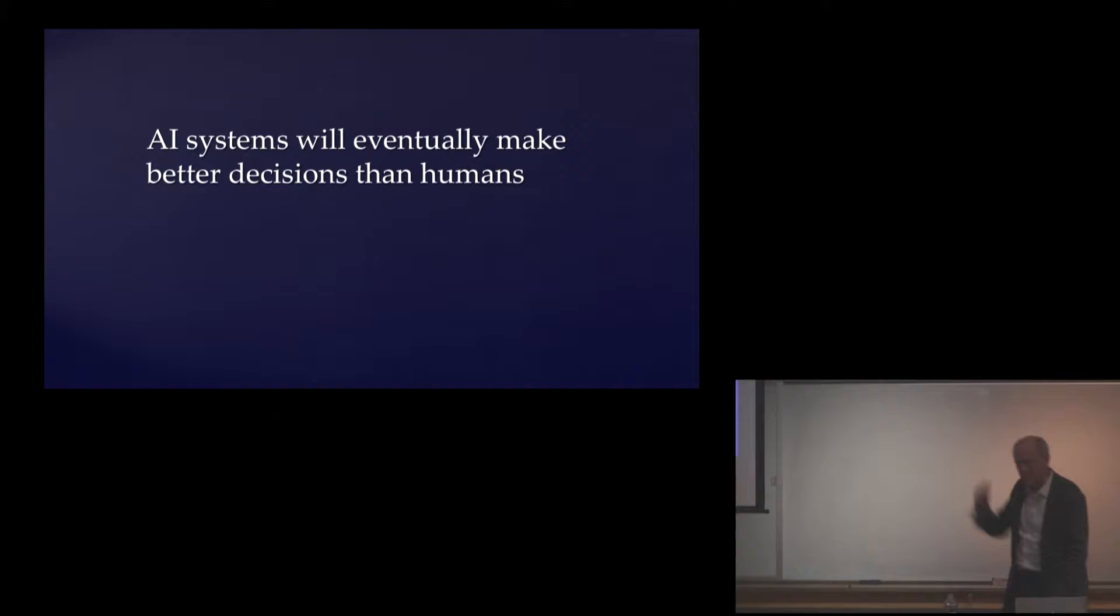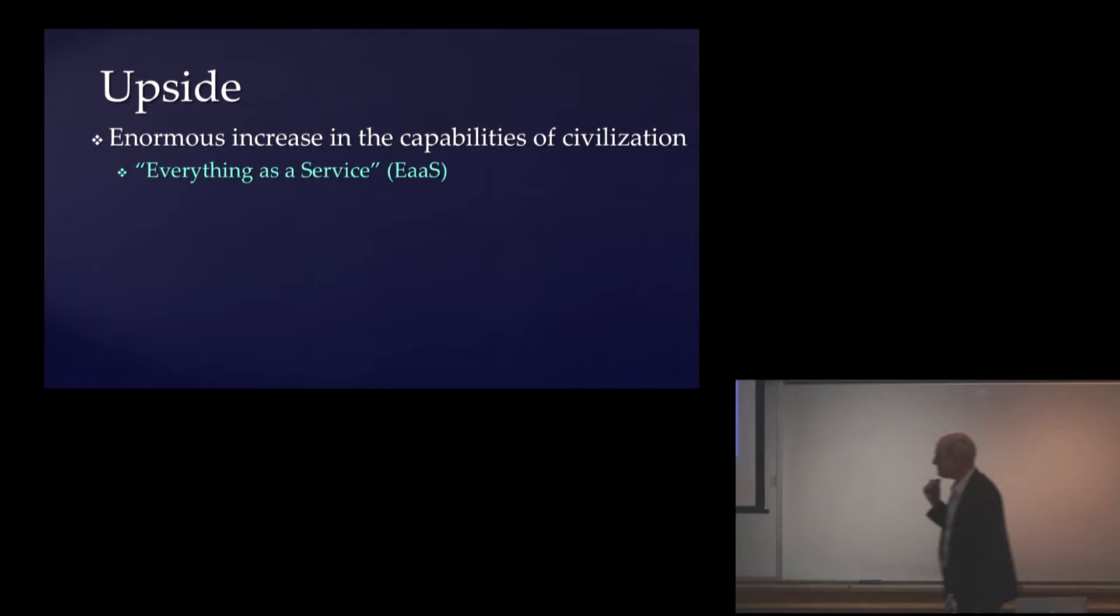So I think it's prudent to assume we will develop AI systems that are fundamentally more capable of making decisions than humans. They will clearly have access to much more information. They will be able to look further ahead in the future than humans can, just as they already do on the chess board and the Go board and the video games. I think this will eventually translate to real world decision making. So this could be a good thing. If it wasn't for the fact that there was some upside, we wouldn't be having this conversation. Of course there is a big upside.